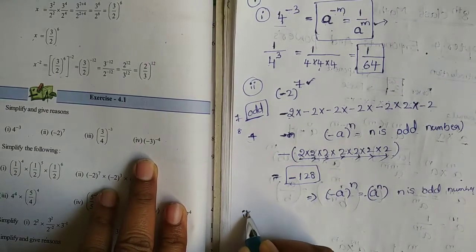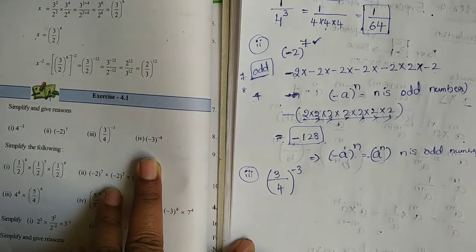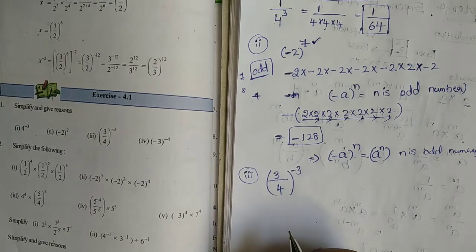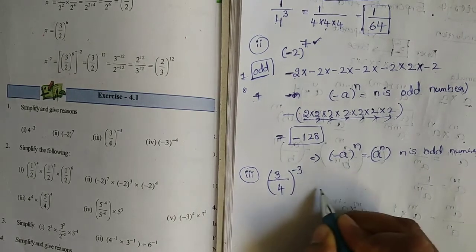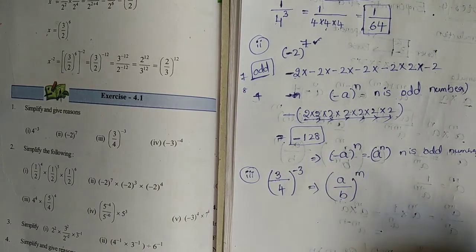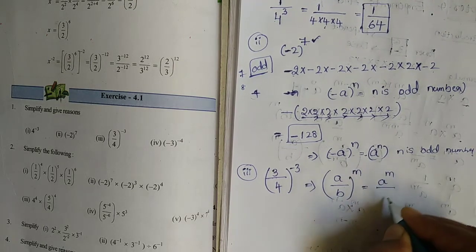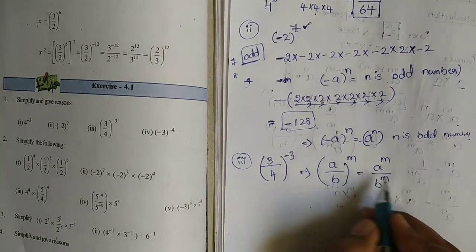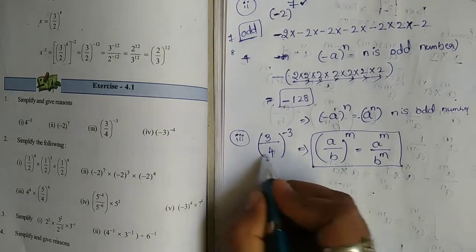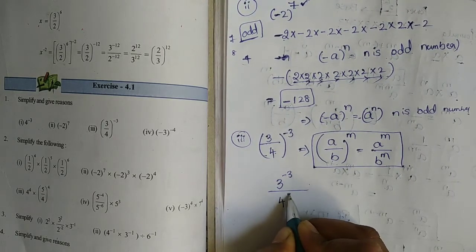Third problem: 3 by 4, whole to the power of minus 3. Here we apply the formula. So this becomes 3 to the power of minus 3 by 4 to the power of minus 3.